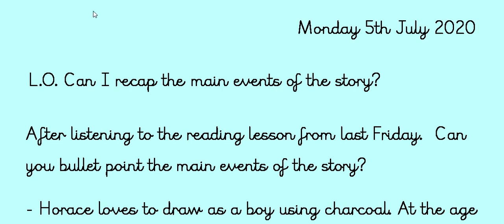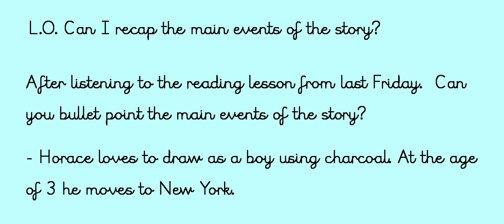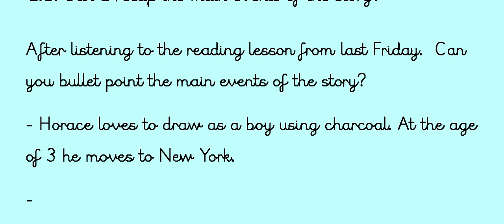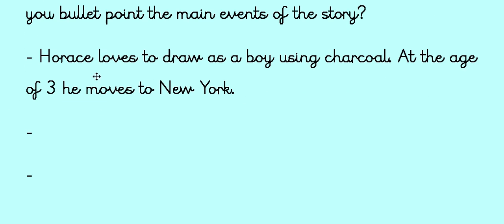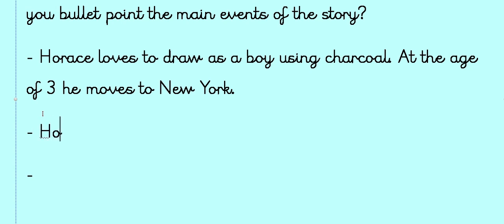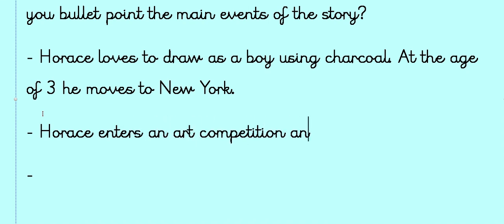Could you bullet point the main events of the story? My first example is: Horace loves to draw as a boy using charcoal — at the age of three he moves to New York. And then your next bullet point might be something like: Horace enters an art competition and wins the prize of paints.